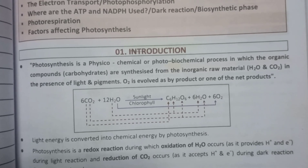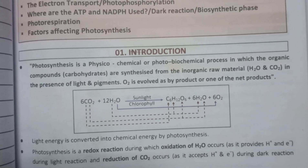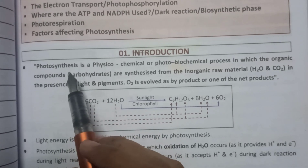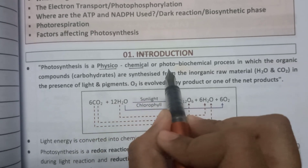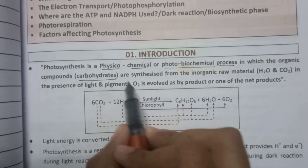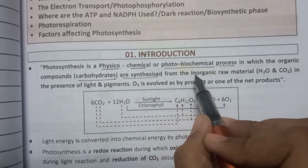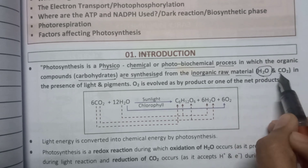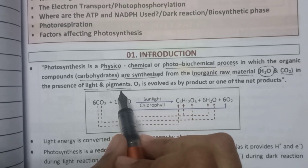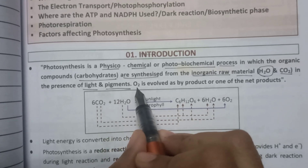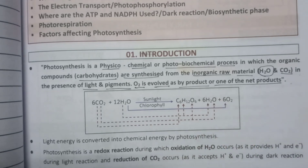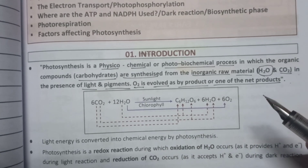In this video, we are going to talk about the photosynthesis chapter for higher plants. First of all, what is photosynthesis? Photosynthesis is a photobiochemical process in which organic compounds like carbohydrates are synthesized from inorganic raw materials like water and carbon dioxide, in the presence of light and chlorophyll pigments like chlorophyll A, chlorophyll B, xanthophyll, and carotenoids. O2 is evolved as a by-product. This is the actual definition of photosynthesis.